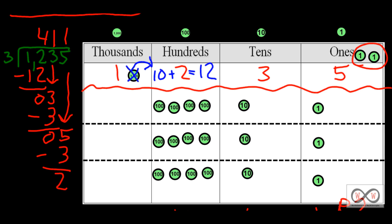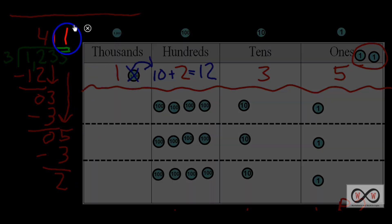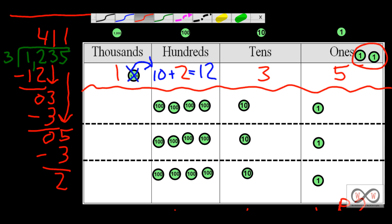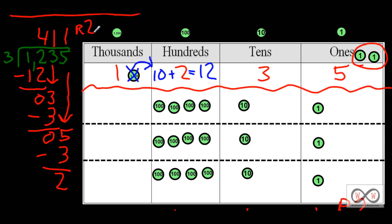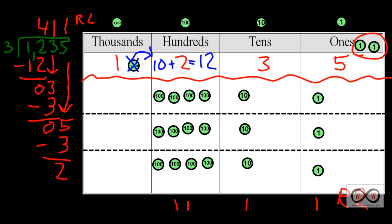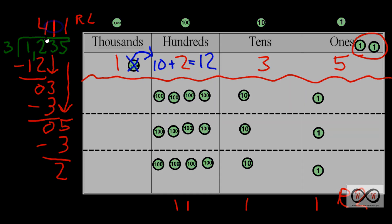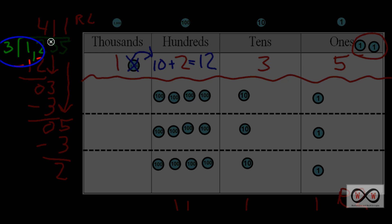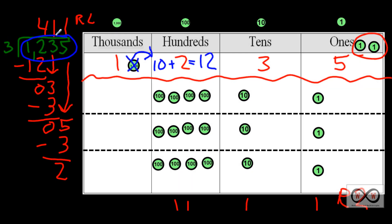That difference of 2 now becomes your remainder, so we'll put it right up there. We'll show our remainder with a capital R and the digit 2 — a remainder of 2. So we have 1,235 divided by 3 equals 411 remainder 2. When you think back to when we estimated, we thought it would be close to 400, and it is — that's awfully close to 400. Since we know the inverse of division is multiplication, we can multiply our quotient times our divisor and then add on our remainder, and we should get our original dividend of 1,235.